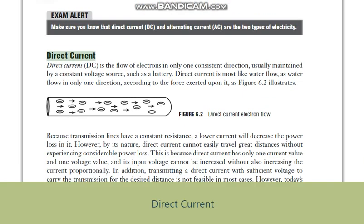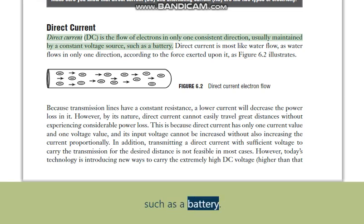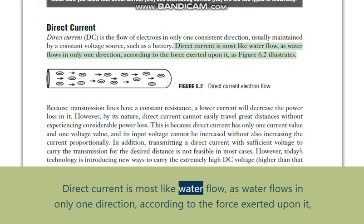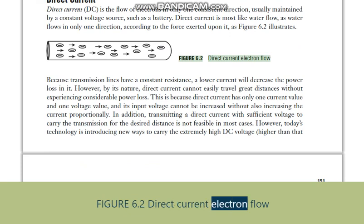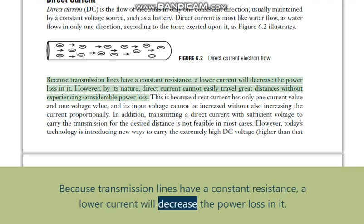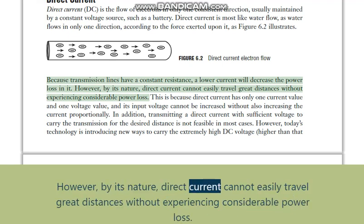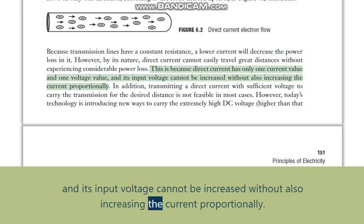Direct current (DC) is the flow of electrons in only one consistent direction, usually maintained by a constant voltage source such as a battery. Direct current is most like water flow, as water flows in only one direction according to the force exerted upon it, as Figure 6.2 illustrates. Because transmission lines have a constant resistance, a lower current will decrease the power loss in them. However, by its nature, direct current cannot easily travel great distances without experiencing considerable power loss, because DC has only one current value and one voltage value, and its input voltage cannot be increased without also increasing the current proportionally.